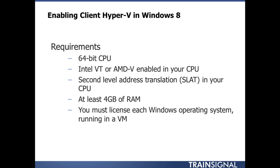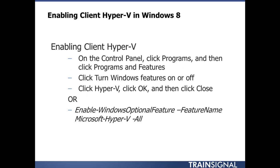Once you're sure that you've met these requirements, you can enable Client Hyper-V in Windows 8. To enable it in the graphical environment, you'll go to the Control Panel, click on Programs, then click on Programs and Features. You'll click to turn Windows features on or off, click Hyper-V, click OK, and then Close. It's very quick and easy to install Client Hyper-V in Windows 8.